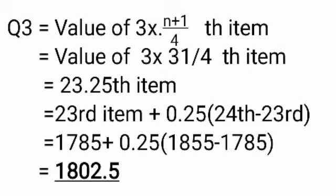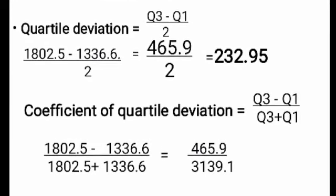For the third quartile Q3, we calculate the value of 3(n+1)/4 th item, which is 3 × 31/4 = 23.25th item. This equals the 23rd item plus 0.25 into (24th item minus 23rd item). The 23rd item is 1,785 plus 0.25 into (1,855 minus 1,785), giving Q3 equals 1,802.5. Now with Q1 and Q3 calculated, we apply the quartile deviation equation: Q3 minus Q1 divided by 2.